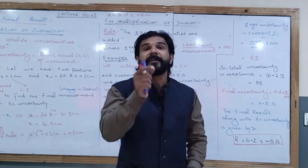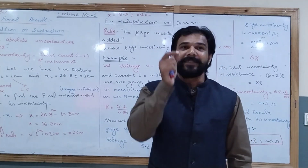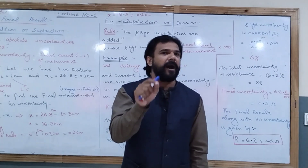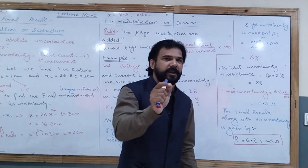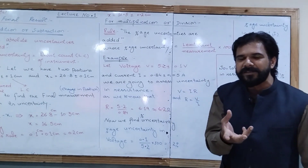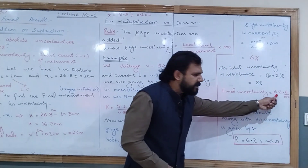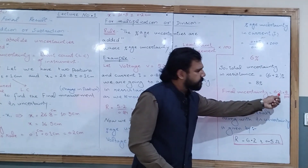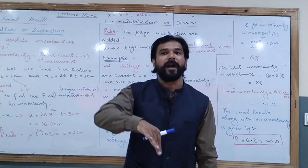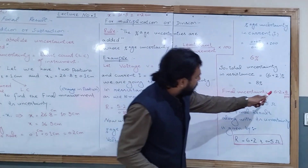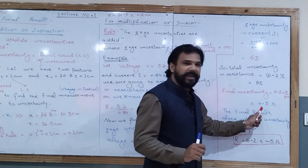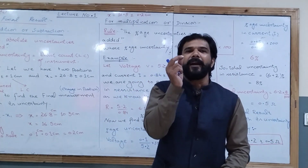So the resistance value will be uncertain up to 8%. To convert this to an absolute uncertainty: R = 6.2 Ω, and 8% of 6.2 = (8/100) × 6.2 = 0.5 Ω. So the uncertainty in the resistance is 0.5 Ω.